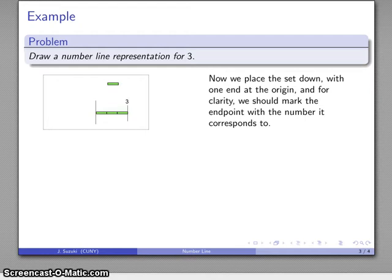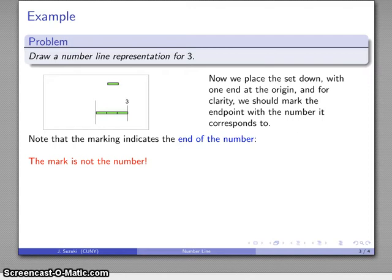And here's where the confusion over the meaning of the number line arises. The important thing to realize here is that the mark indicates the end of the number. It indicates the end point of the set whose cardinality is three. The mark is not the number. When we talk about the point on the number line that corresponds to a particular set, we might say, well here is three.